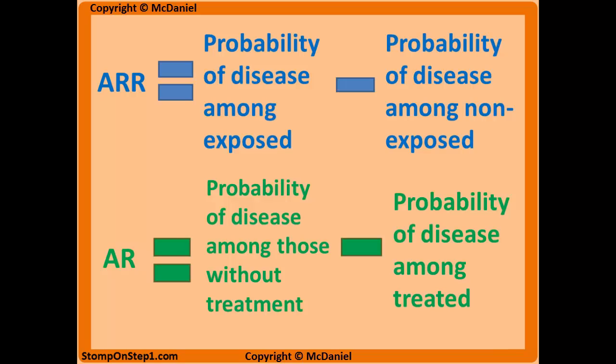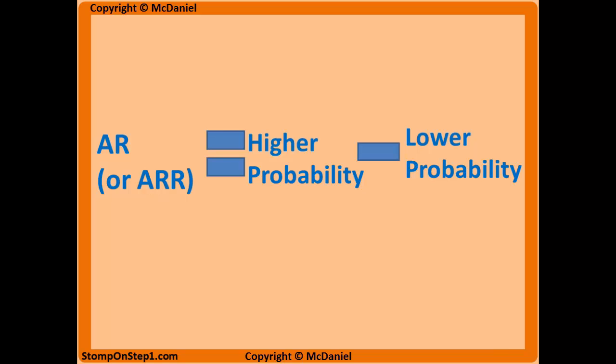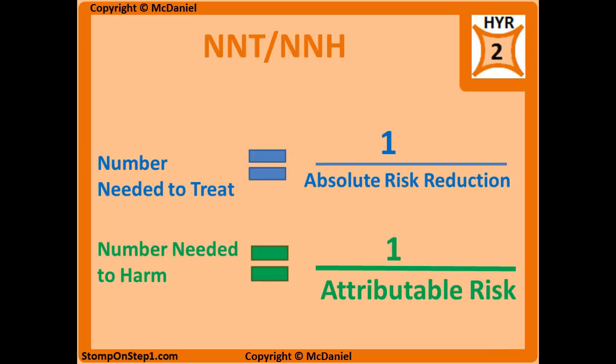Here are the formulas for ARR and AR. These are a little difficult to keep straight, so I just remember a simplified version: whichever one I'm using, it's going to be the higher probability minus the lower probability. That applies to both situations and is a lot easier to remember. Whatever the question asks for — AR or ARR — I use this and it works well.